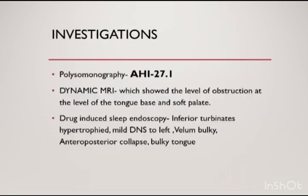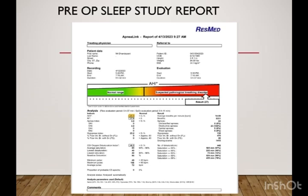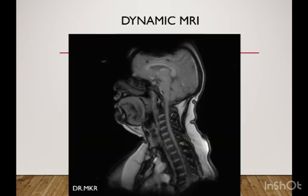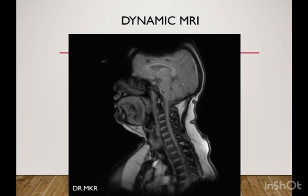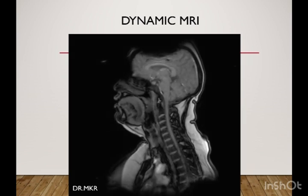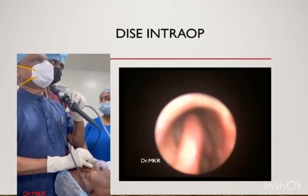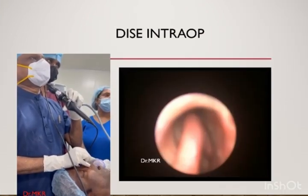You can see the bulky posterior tongue. What we do next is a sleep study. This sleep study shows an AHI of 27.1, and a dynamic MRI that shows a bulky soft palate and posterior tongue.